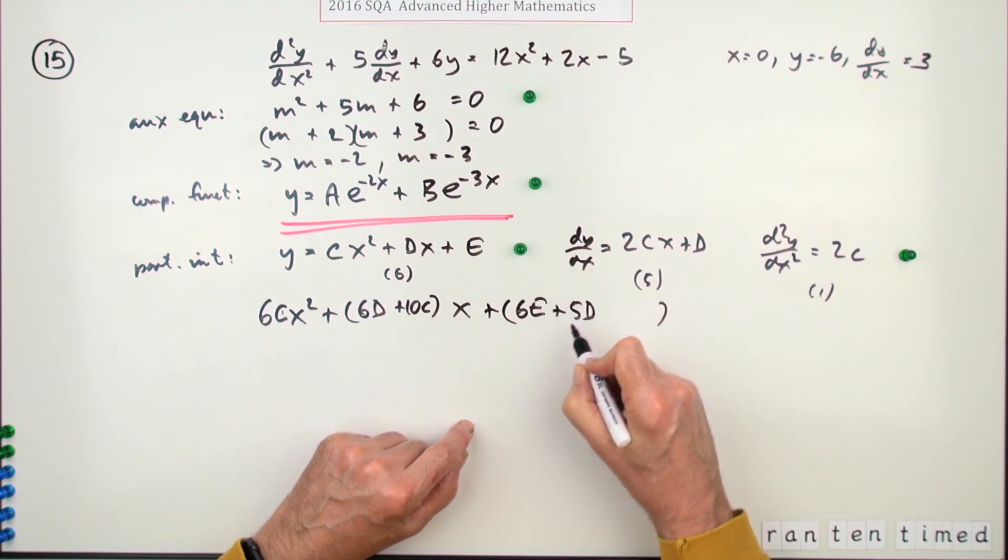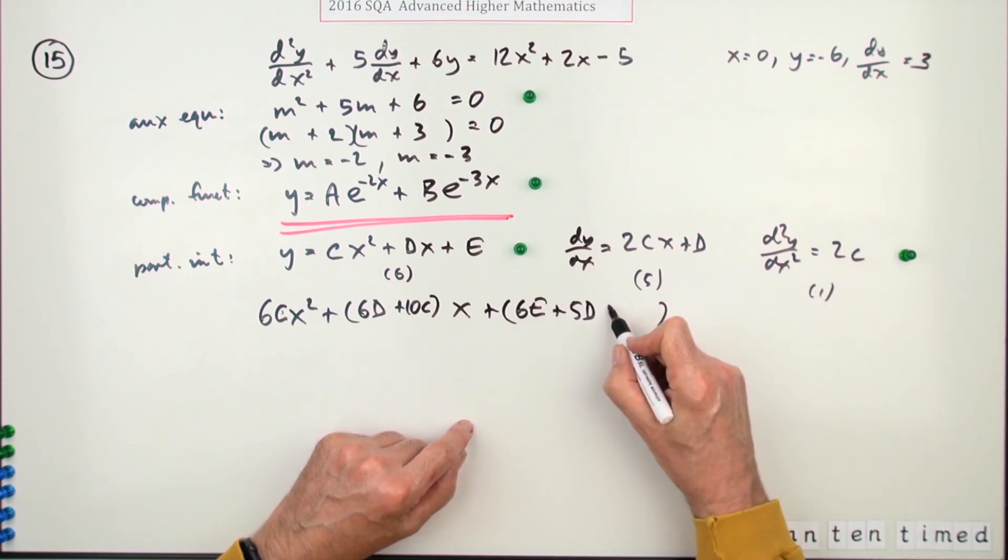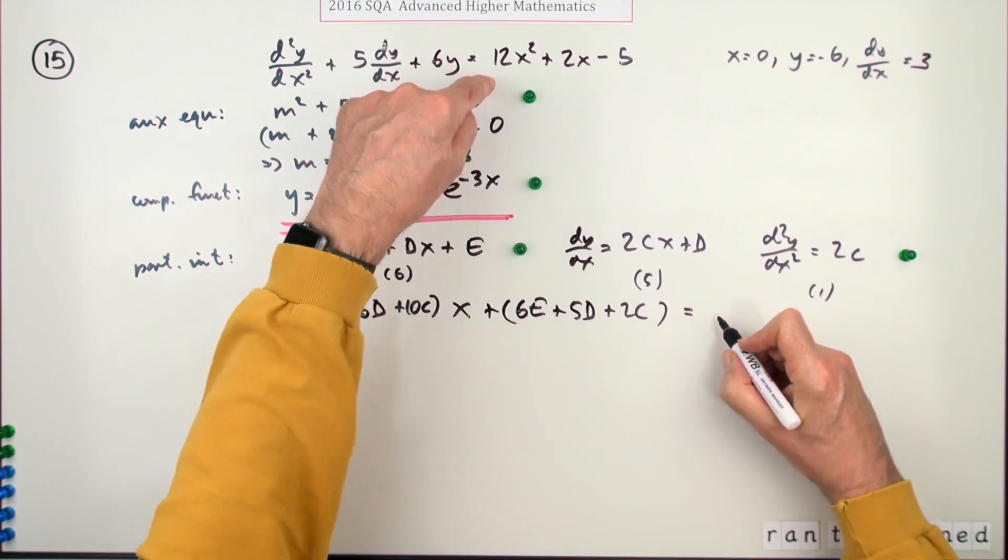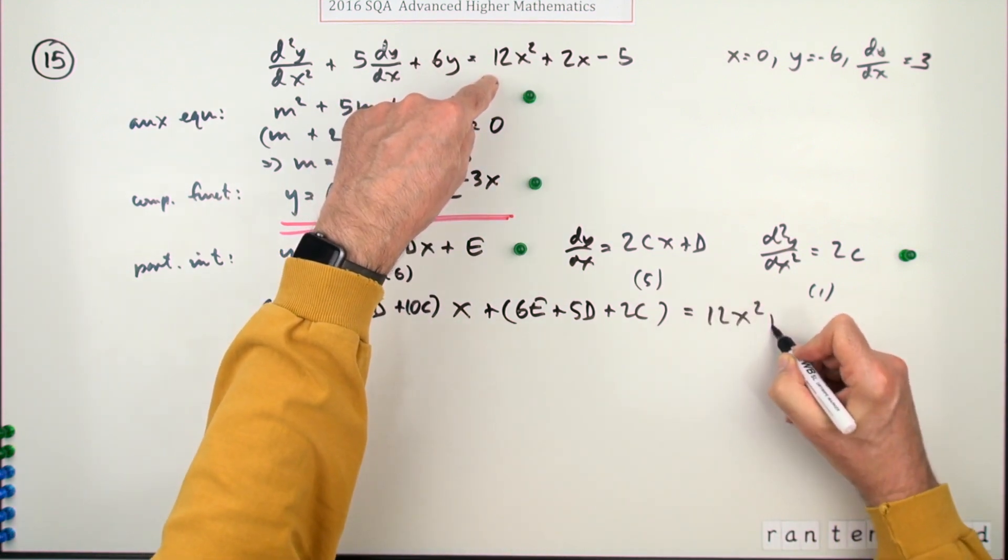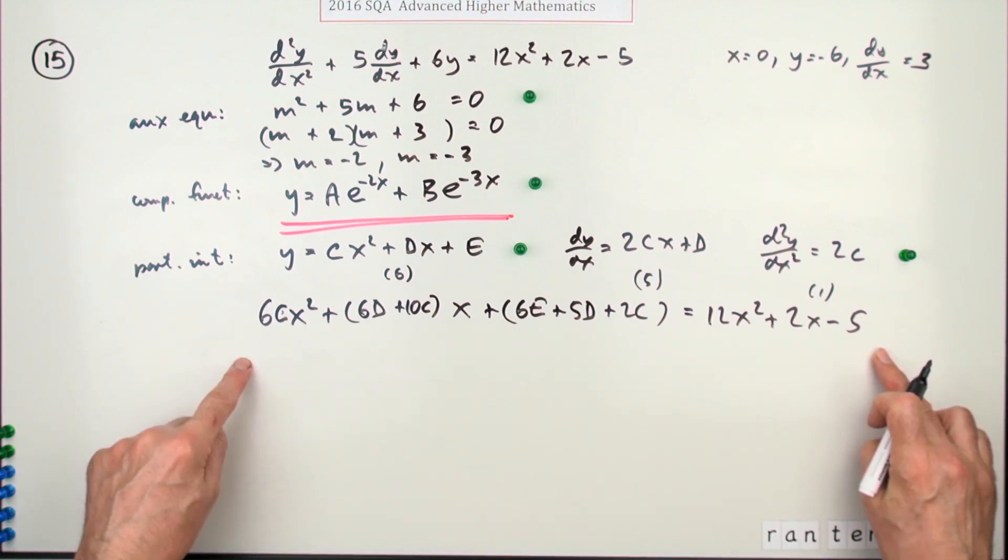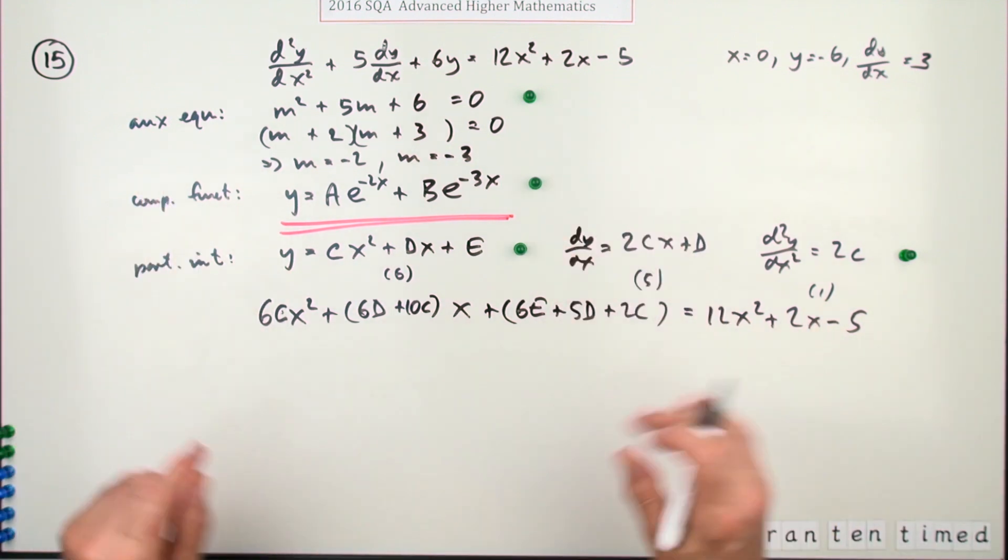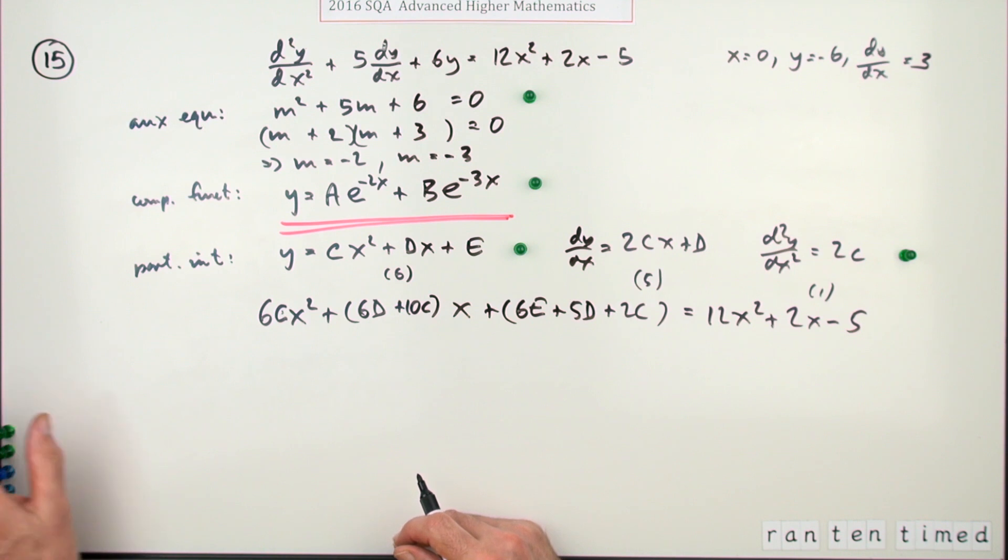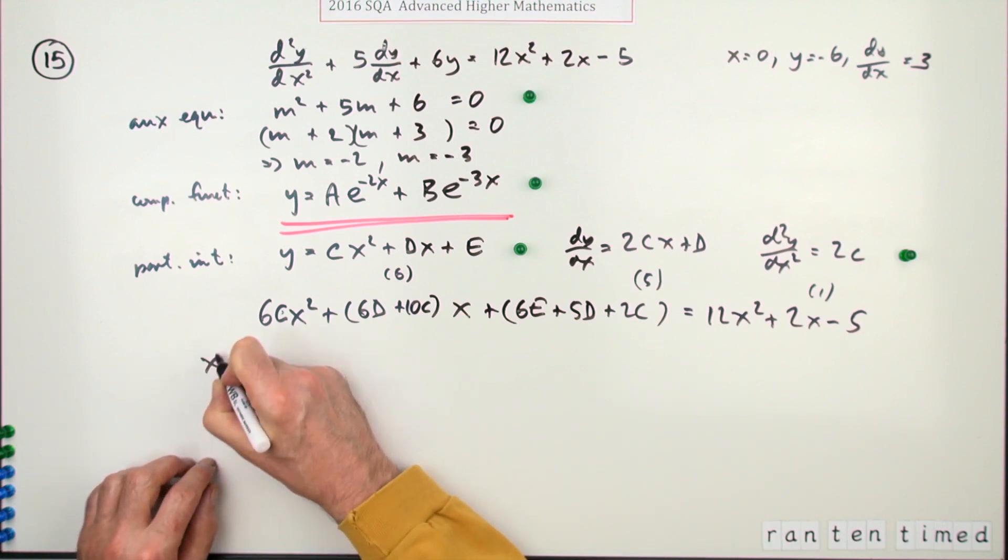Now the constant term. Well, I'm going to have six of those, so that's 6e. I'm going to have five of those, so it's plus 5d. And we have one of those, so it's plus 2c. And all that should equal 12x squared plus 2x minus 5. And if you do that, substituting them in, you get no marks.